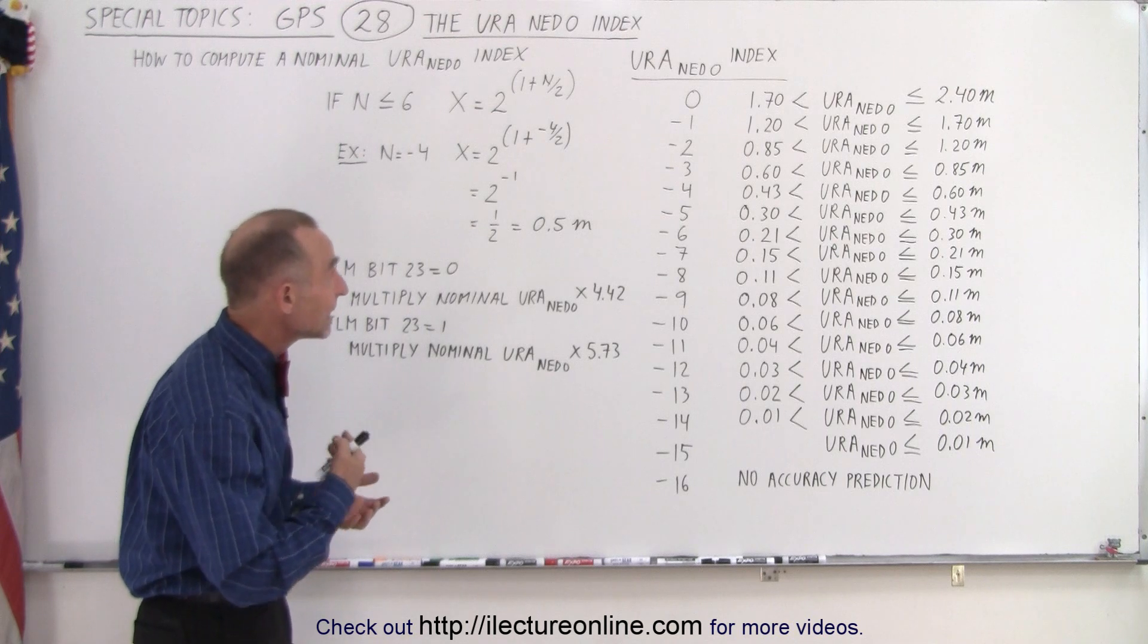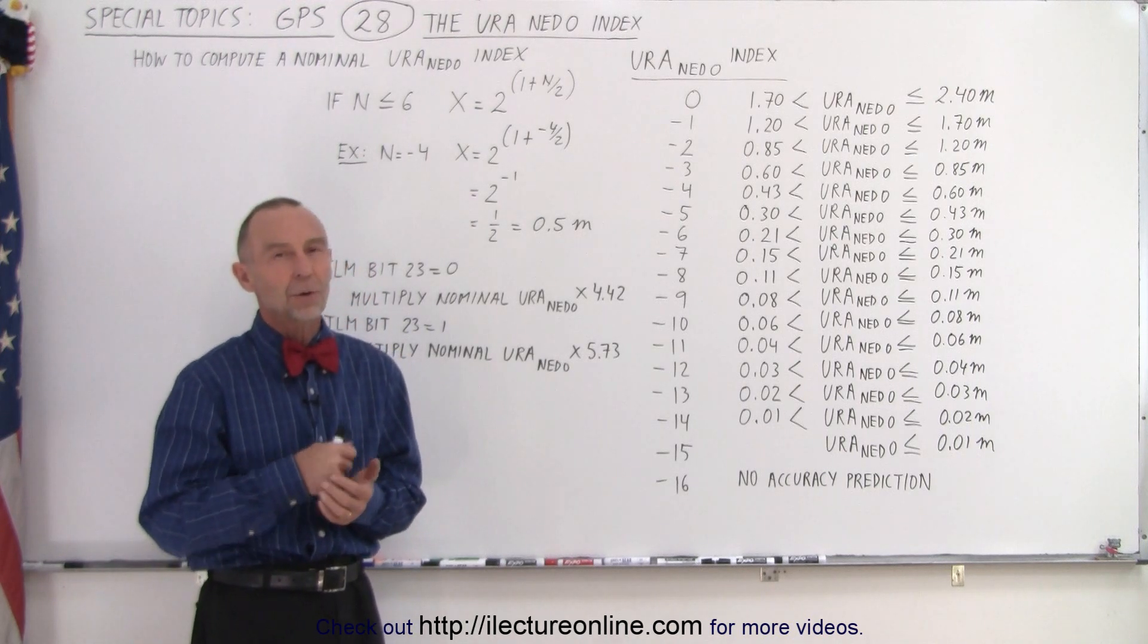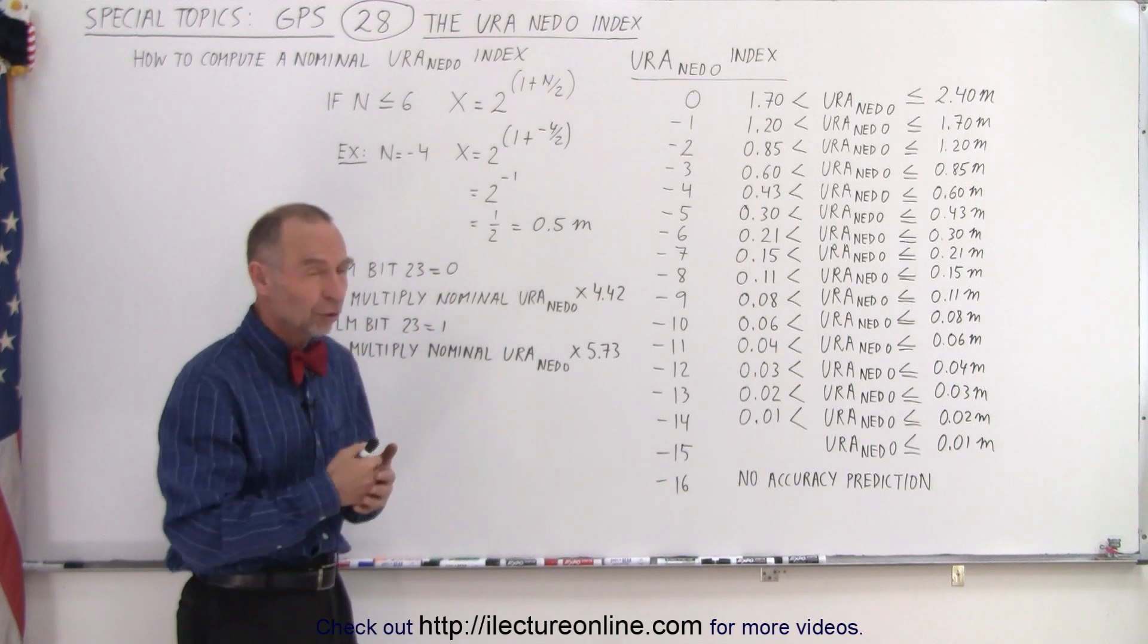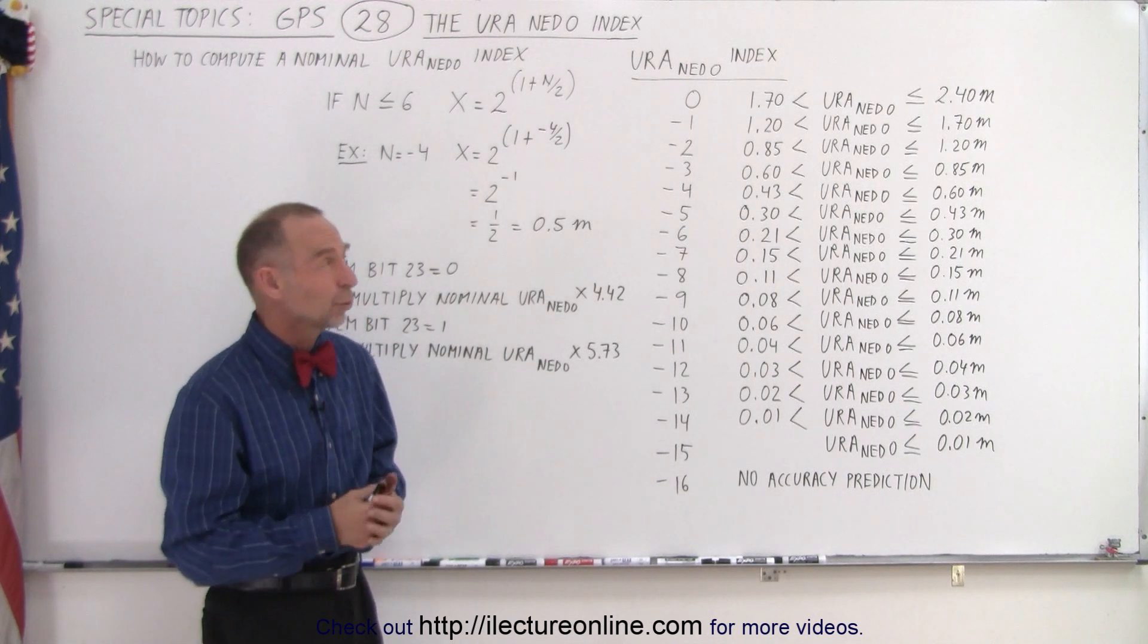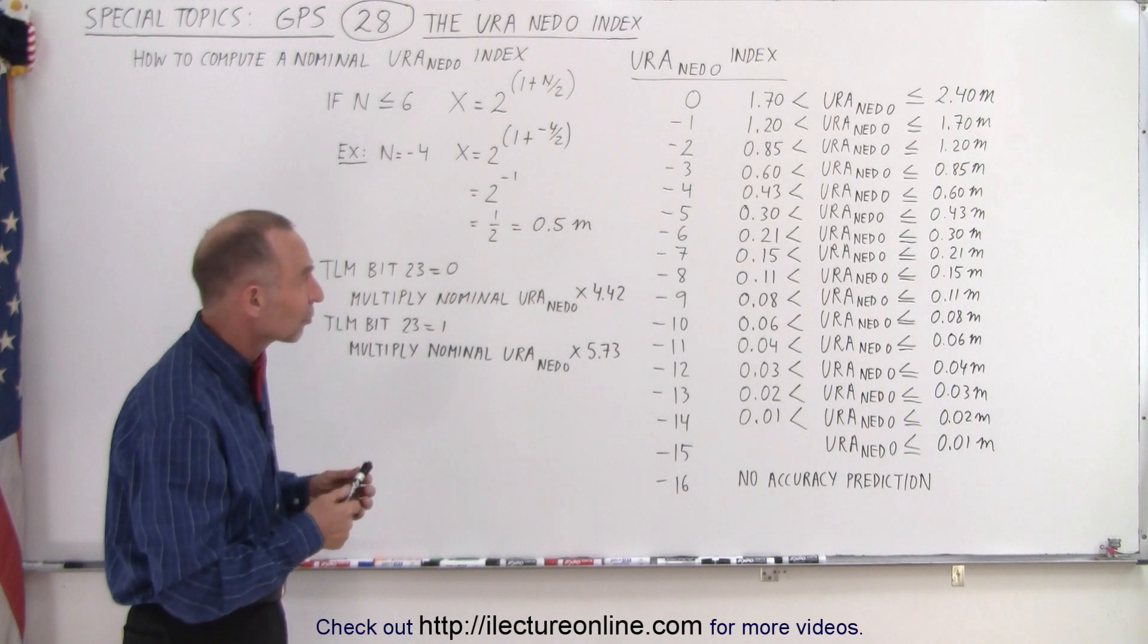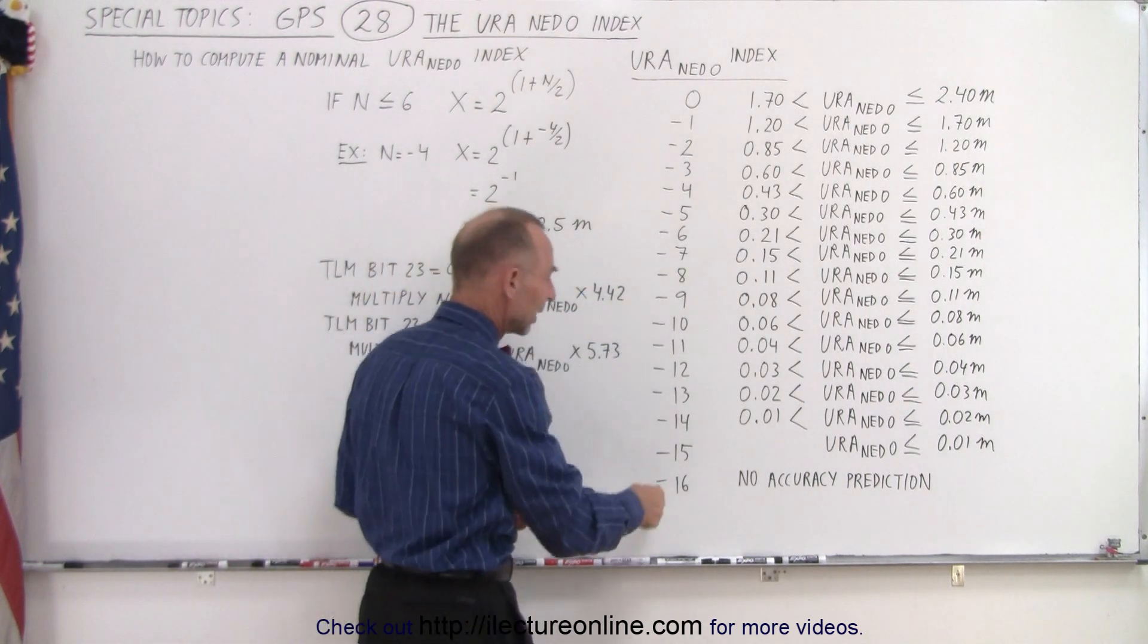Now NED stands for North East Down. Zero is the first of the index; there's a URA NED one index as well, but the URA NED zero index goes from zero all the way down to negative 16. It also takes the positive values.